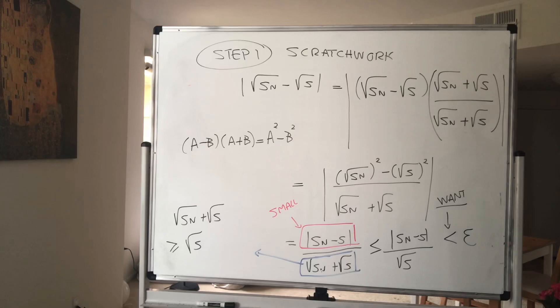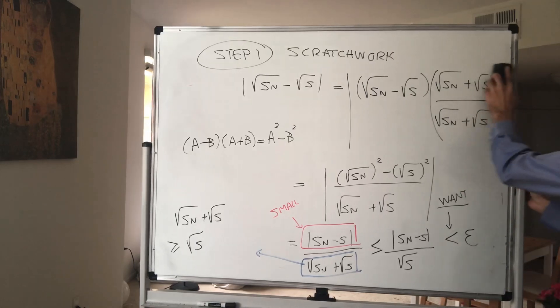What does that mean? We want this small number to be less than epsilon times square root of s.